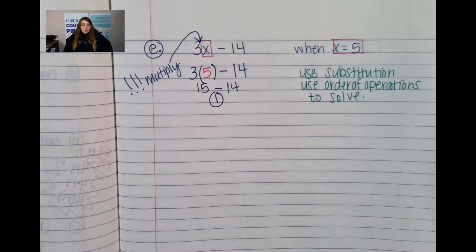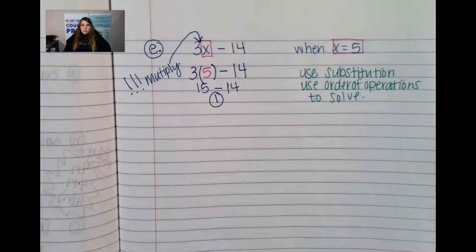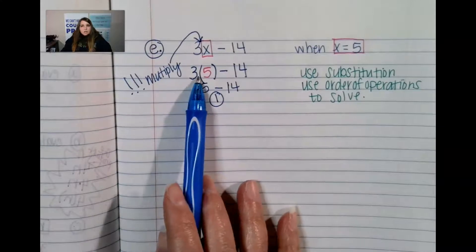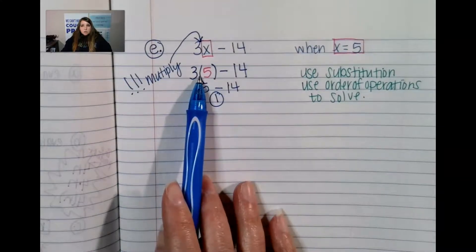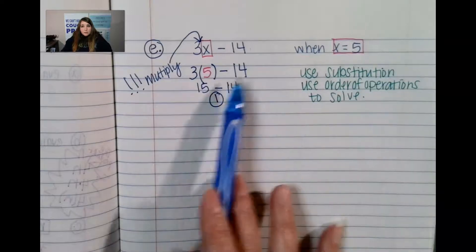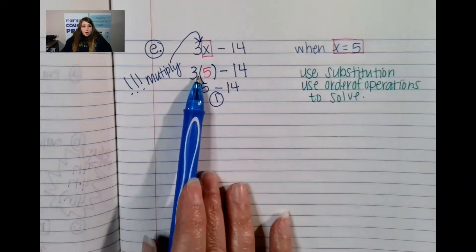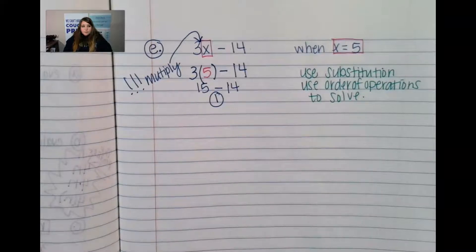We've solved down to 1. You just have to remember that there is an operation right here. It's just invisible. So, there's two things to remember. One, substitute. And two, that there is an invisible operation right there.